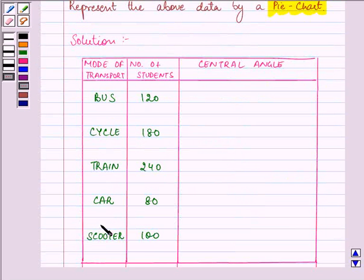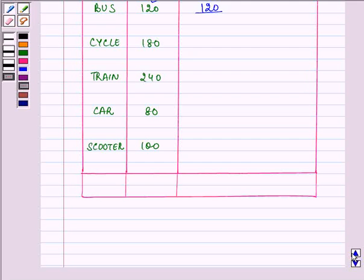Now here the mode of transport and again we have written down the number of students. Here we will be finding out the central angle for each case. So we will find that by dividing 120 by the sum, that is the total number of students that are coming out to be 720.